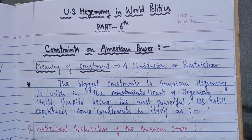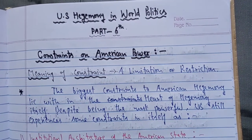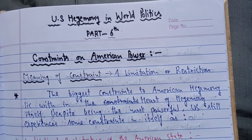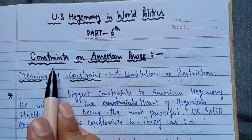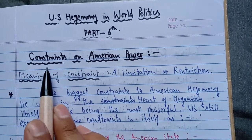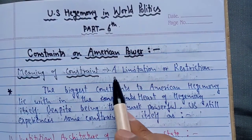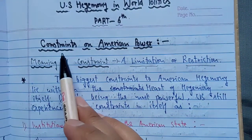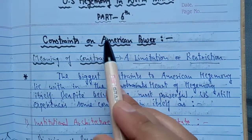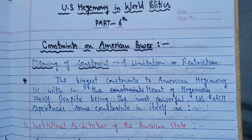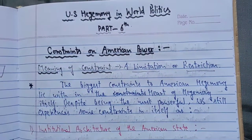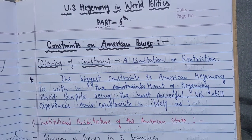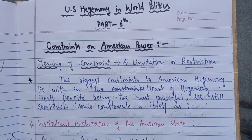America was the sole superpower governing the world in all spheres — military, economics, culture, and ideology. Now, were there any constraints? The meaning of constraints is limitation or restriction. What were the constraints on American power? Because it was the sole power, there was no other country or group to challenge it at that particular period of time, but there were certain limitations and restrictions on the way America was ruling the world according to its wish.